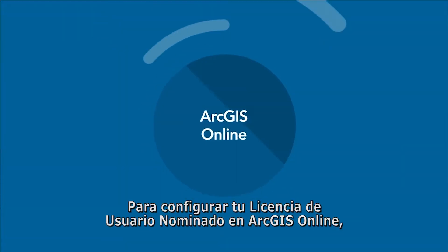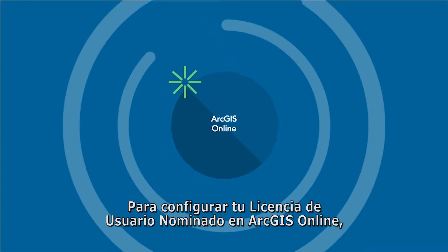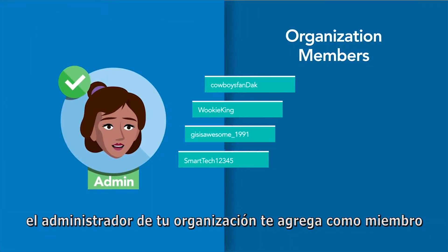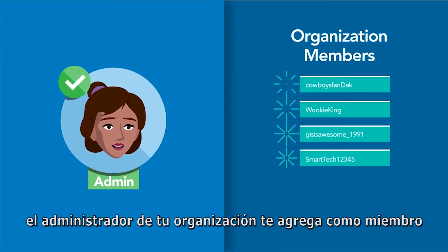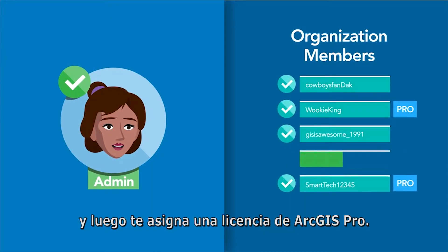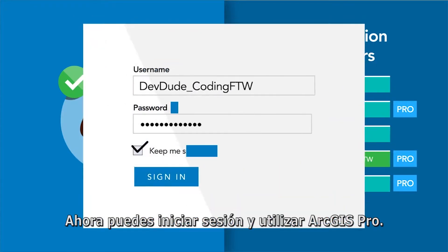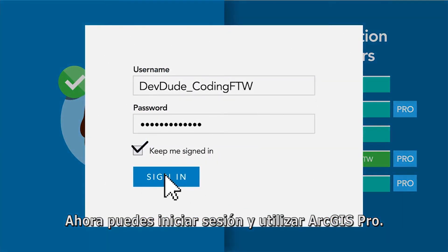To set up your Named User License on ArcGIS Online, your organization's admin adds you as a member and then assigns an ArcGIS Pro license to you. Now you're able to sign in and use ArcGIS Pro.